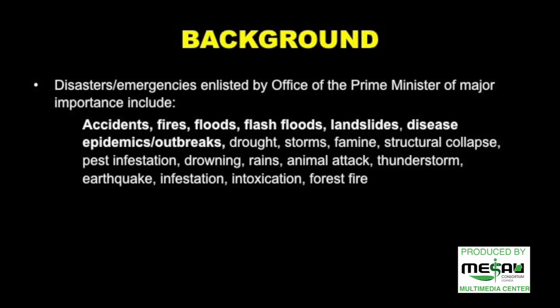In Uganda, the Office of the Prime Minister is responsible for preparedness and response to all the major emergencies and disasters. They have a list of disasters that they prioritize, which includes accidents, fires, floods, flash floods, landslides, disease epidemics and outbreaks, droughts, storms, famine, structural collapse, pest infestation, drowning, rains, animal attacks, thunderstorms, earthquakes, infestation, intoxication, and forest fires.